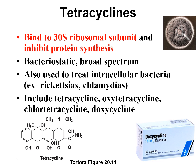Our next protein synthesis inhibitor antibiotic is the tetracyclines. They got their name from their chemical structure — tetra meaning four — they have four rings bound together. There are a number of tetracycline antibiotics; doxycycline is one commonly used that you might have seen in patients. You just need to know that tetracyclines bind to 70S ribosomes and inhibit protein synthesis.